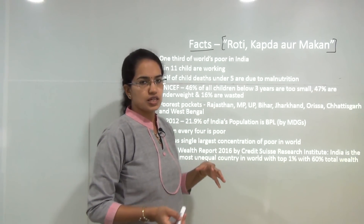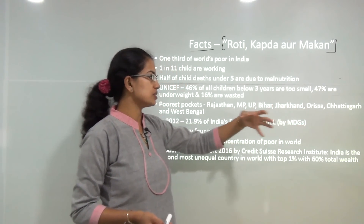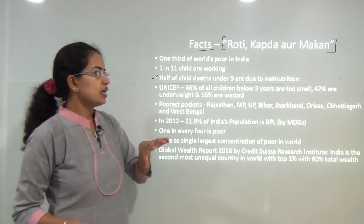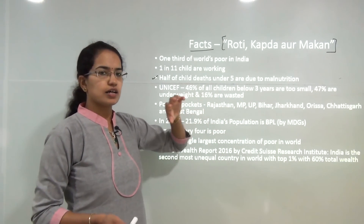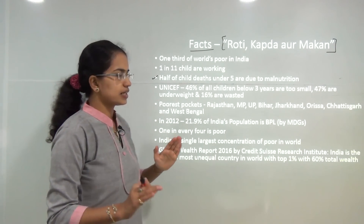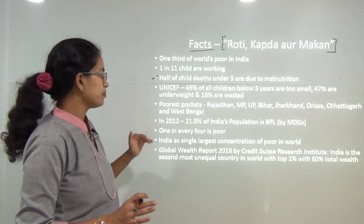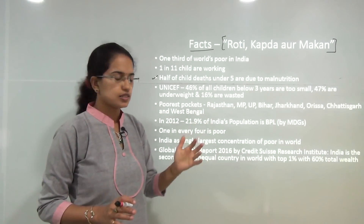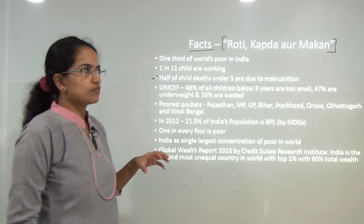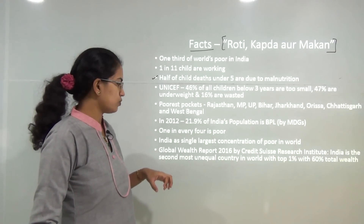The BIMARU states — Rajasthan, Madhya Pradesh, Uttar Pradesh, Bihar, Jharkhand, Odisha, Chhattisgarh and West Bengal — are the major states affected by poverty. On the other hand, states like Maharashtra and the southern states are flourishing well in comparison to the northern states. India has the single largest concentration of poor in the world.